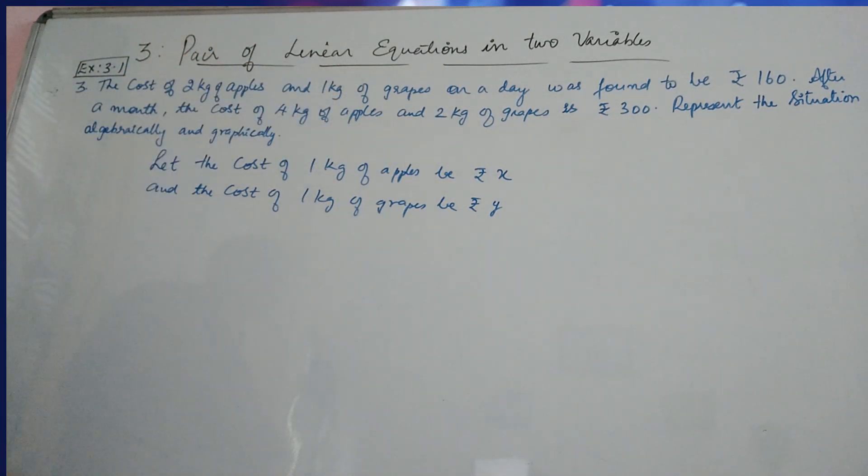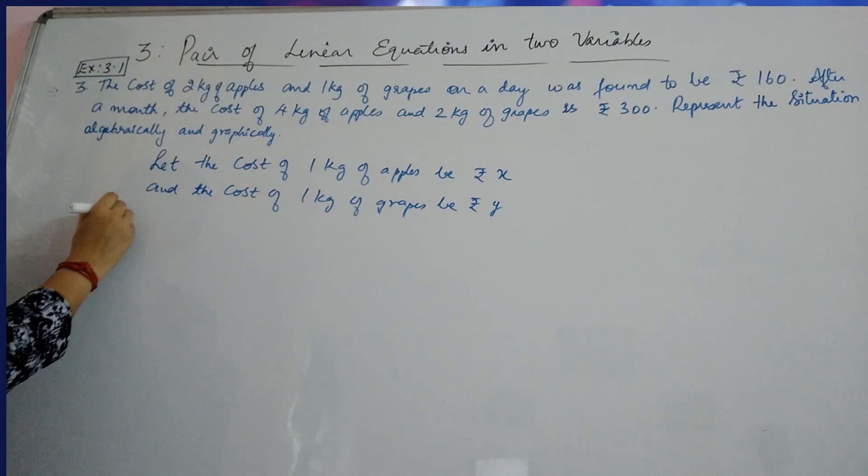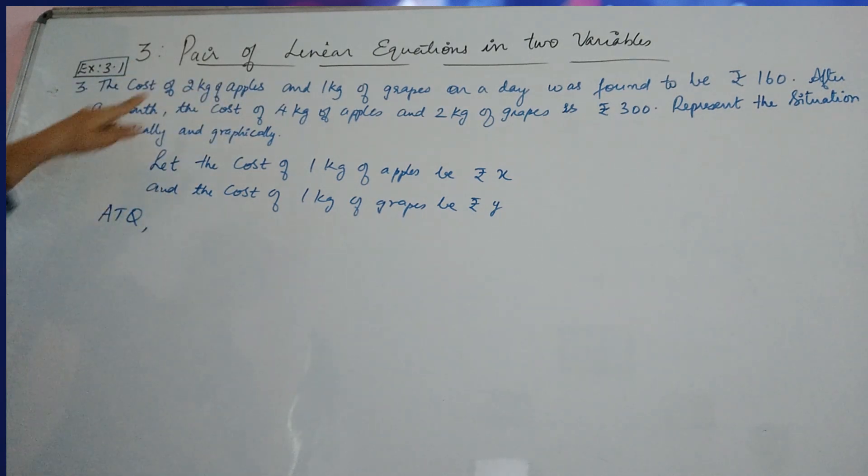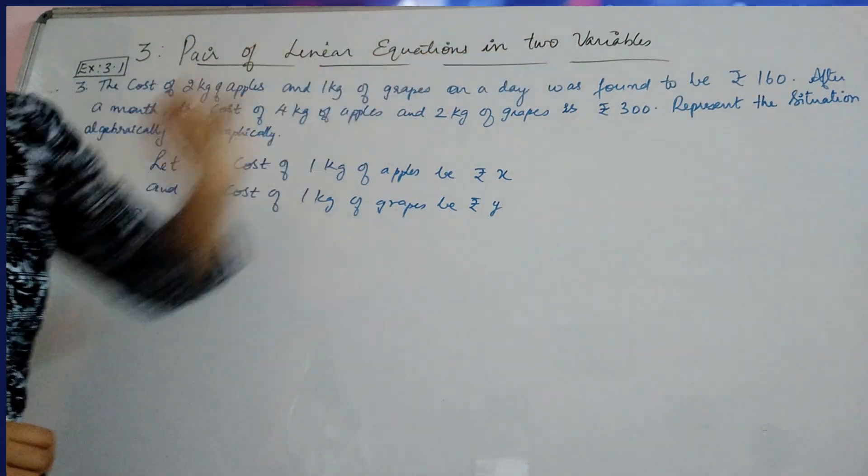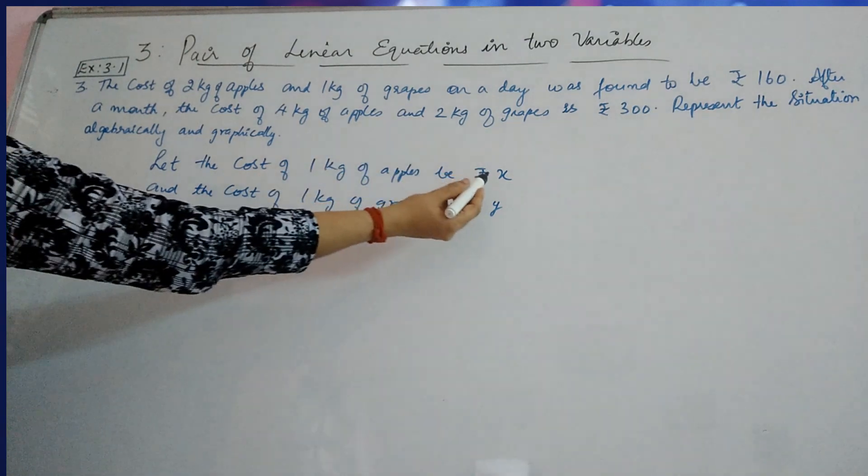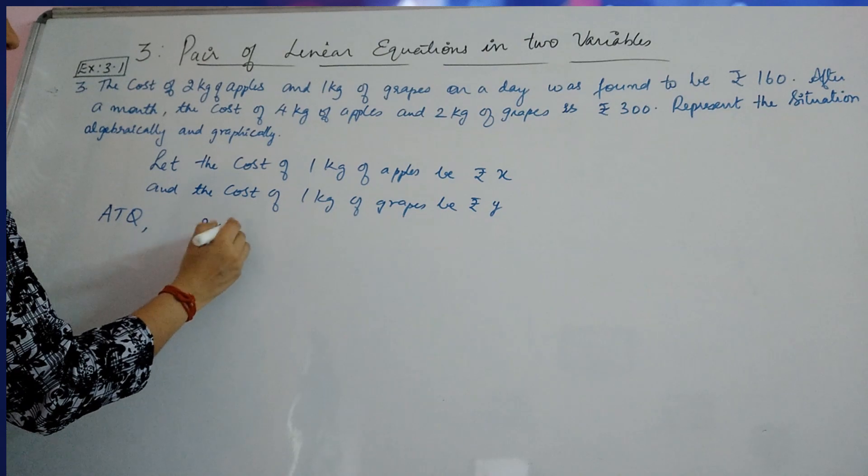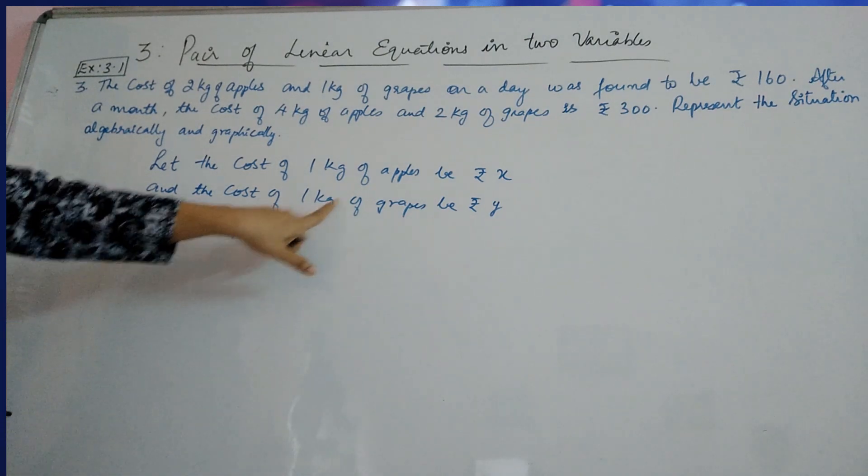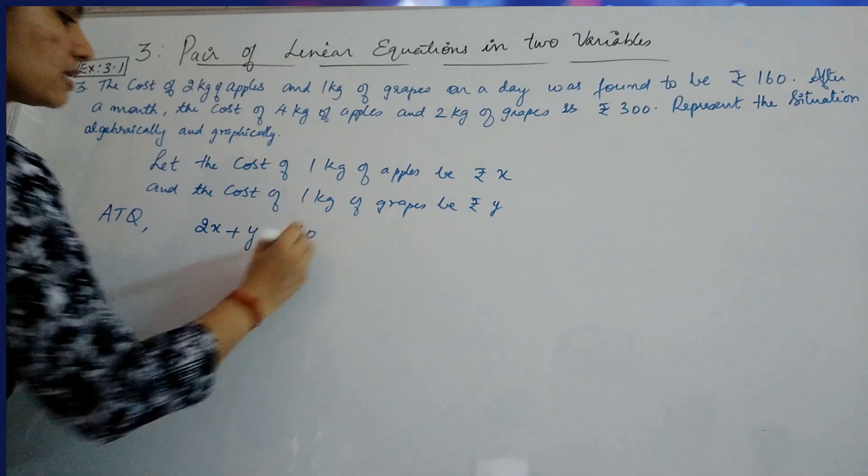Now, what is the situation given here? Cost of 2 kg of apples, that is according to question, what you get? Cost of 2 kg of apples and 1 kg of grapes was found to be Rs. 160. That means it is Rs. 2x, because 1 kg costs Rs. X, 2 kg will cost Rs. 2x. Plus 1 kg of grapes is Y, and here you need 1 kg, so you can get 2x plus Y is equal to 160.